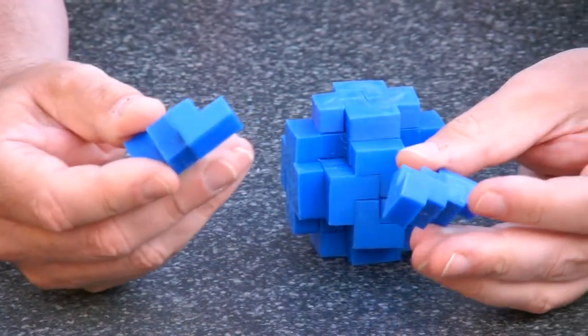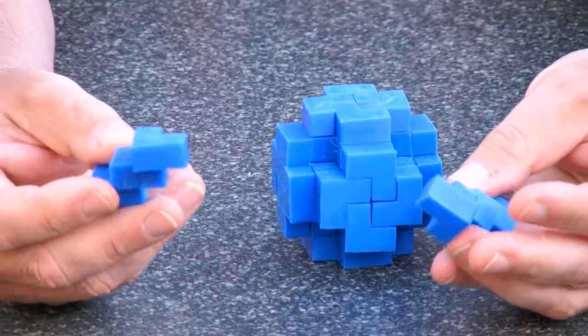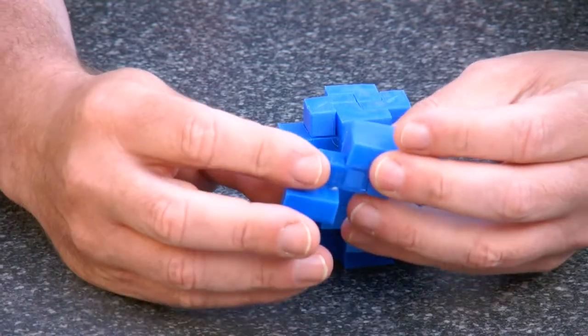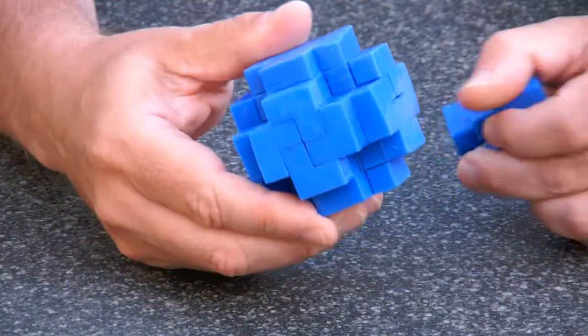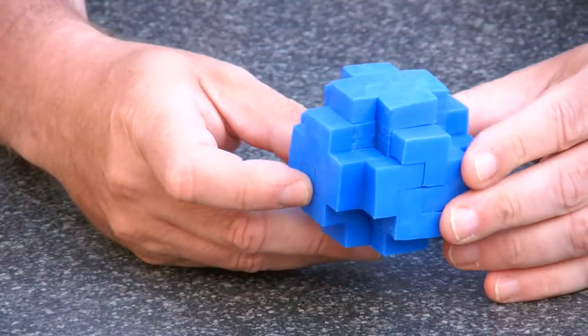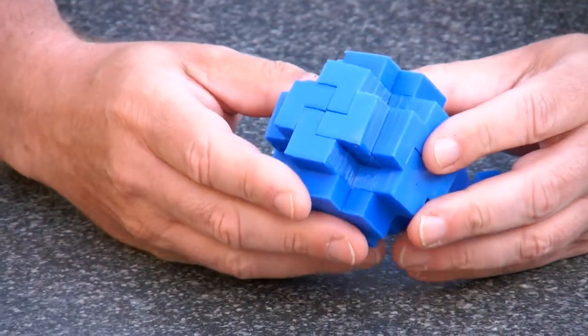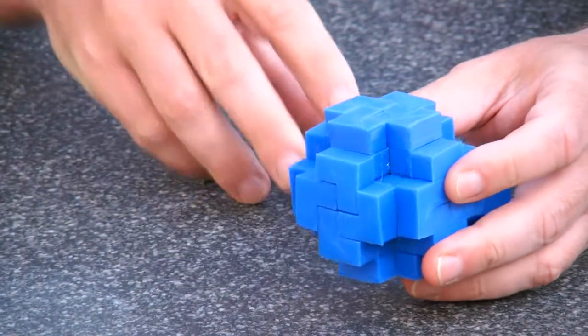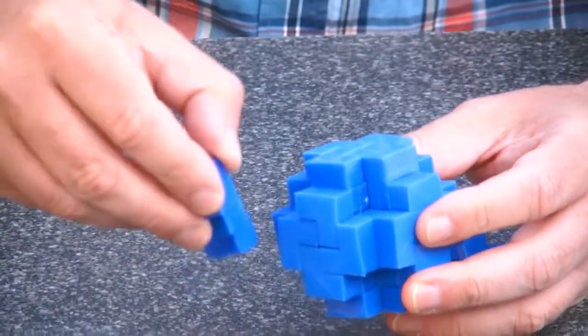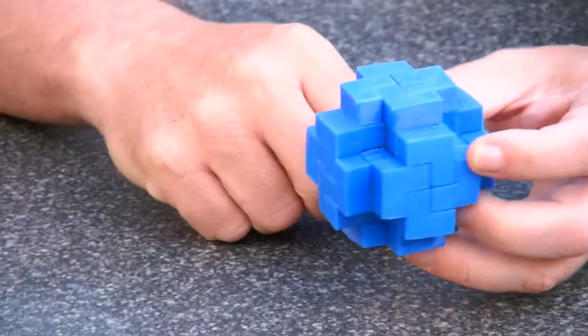So my idea was, can I build this into a nice shape? And the obvious shape to build from this is of course the Cubic Spiral Burr where you have a total of 12 pieces and they all go diagonally through the cube.